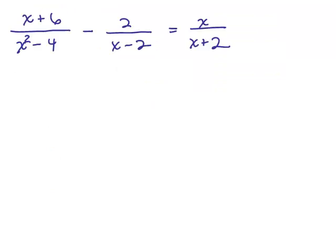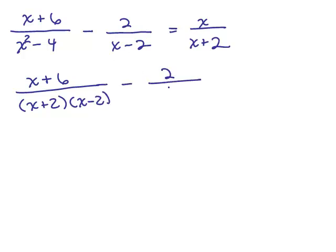Here's another problem. Let's solve this by making all the denominators the same. It's easier to figure that out by factoring each denominator if it can be factored. The first denominator, x squared minus 4, can be written as x plus 2 times x minus 2. The second denominator is x minus 2, which can't be factored further. The right-hand denominator is x times x plus 2, and I'm going to have to multiply that fraction by something.